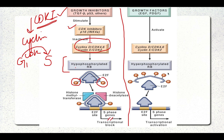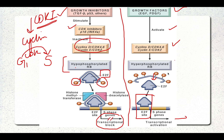When growth factors such as EGF and PDGF are present in a normal cell, cyclin and CDK activation takes place, leading to the hyper-phosphorylated form of the RB gene. This releases the E2F transcription factor, which binds to the E2F site and transcription takes place, allowing the cell to proceed through the cycle.